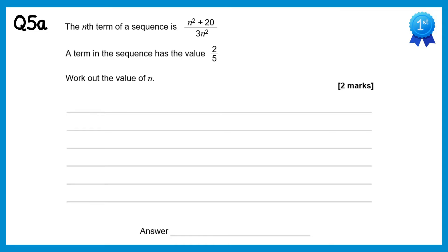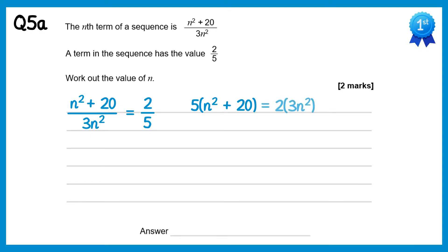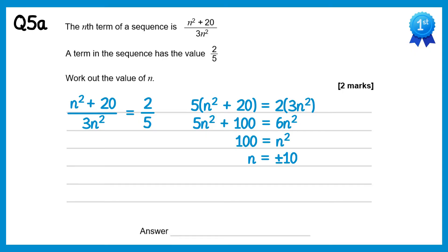For this sequence we're told that one of the terms equals 2 over 5, so we write the nth term equals 2 over 5. Cross multiplying gives 5 lots of n squared plus 20 on the left, and 2 lots of 3n squared on the right. Expanding gives 5n squared plus 100 equals 6n squared. Subtracting 5n squared from both sides gives 100 equals n squared. Square rooting both sides gives n equals plus or minus 10. Since n can't be negative, the answer is n equals 10.